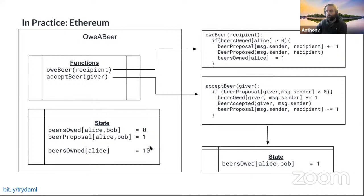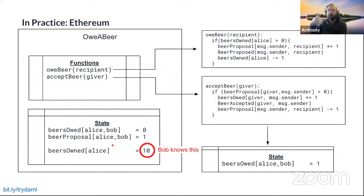Ethereum has this mutable state where values can change, and all these updates happen through new transactions calling functions that create changes in state. The overarching point is that the specific bug we're going to look at — a re-entrancy attack — can occur because you have to think very carefully about each and every line of code and how it affects the underlying state. This can be a pitfall for even very seasoned programmers, producing very non-obvious bugs.